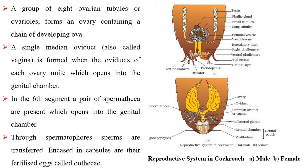Lying laterally in the second to sixth abdominal segments is the female reproductive system consisting of two large ovaries. A group of eight ovarian tubules or ovarioles form an ovary containing a chain of developing ova. A single median oviduct is formed when the oviducts of each ovary unite, which opens into the genital chamber. In the sixth segment, a pair of spermathecae are present which open into the genital chamber. Sperms are transferred through spermatophores. Fertilized eggs are encased in capsules called oothecae.